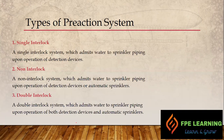In a single interlock system, water is admitted to the sprinkler piping upon activation of a detection device. If a detector detects a fire, it sends a signal to open the solenoid valve — water then enters the piping. If the sprinkler bulb is fused due to heat, water will discharge; otherwise it will not discharge.